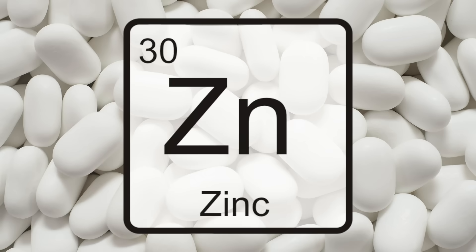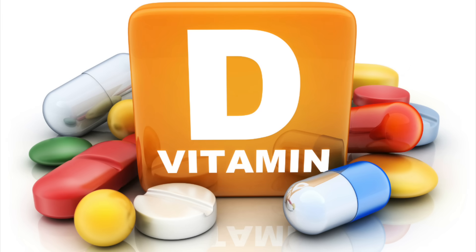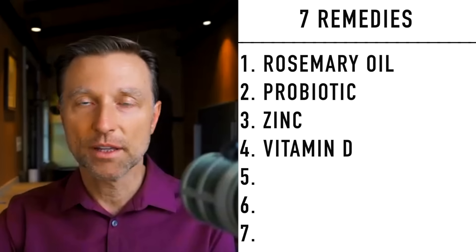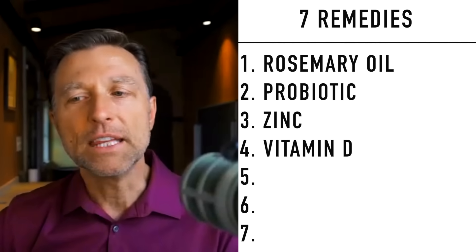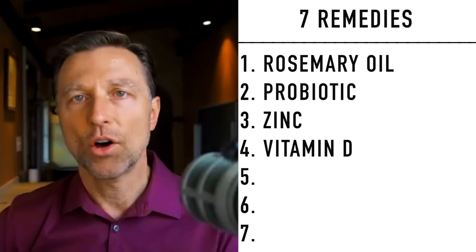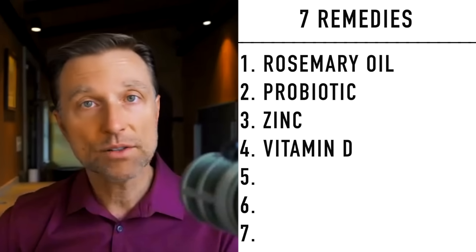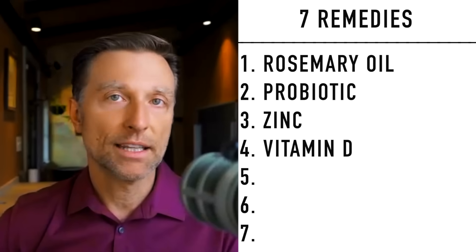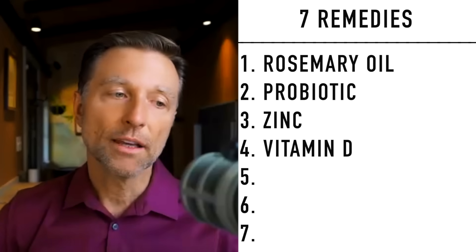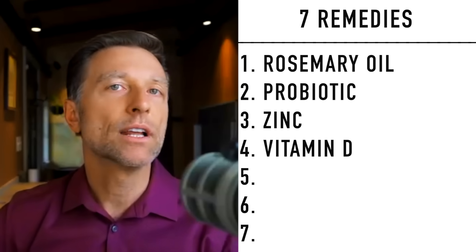Number three is zinc — zinc is essential if you have any immune issues at all. Number four is vitamin D. Vitamin D and zinc together are very important for any immune problems. Vitamin D is an immune modulator and is the best remedy for any autoimmune condition. I would recommend taking nothing less than 10,000 IUs, and probably 20,000 to 30,000 IUs of vitamin D every single day.